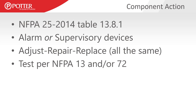NFPA 25 has a component action table — Table 13.8.1 in the 2014 edition — that tells us whenever we make a change to the system, what we have to do to restore it to service. Alarm or supervisory devices are lumped together in that table. It says that if we adjust, repair, or replace any of these devices, they have to be tested per NFPA 13 and/or NFPA 72. Most of the time these acceptance tests line up, but if we replace or adjust one of these switches, there's a complete acceptance test that has to take place per NFPA 25, which then refers us to NFPA 13 or 72 for those acceptance test procedures.